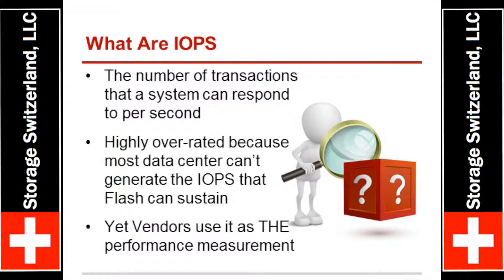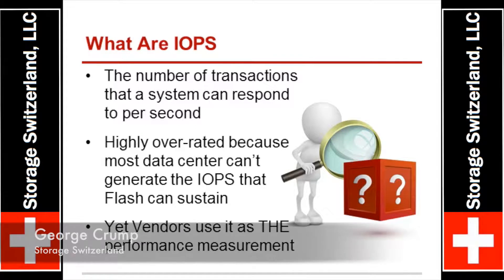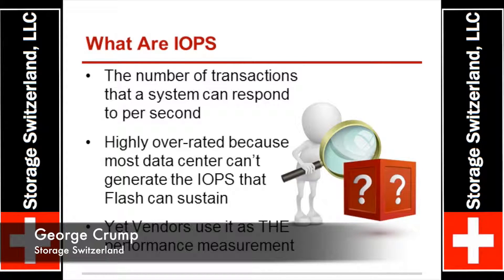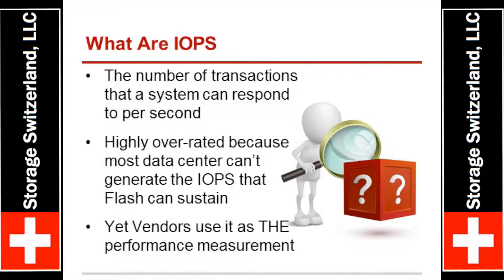My problem with IOPS as a number — saying our system can do 500,000 IOPS — is there are really a lot of little questions beneath that, like in that test, how many were reads and writes, what was the block size, correct?